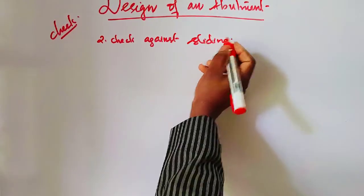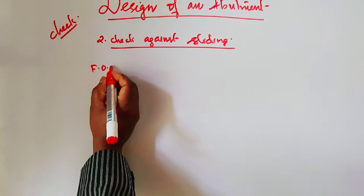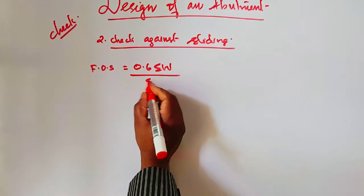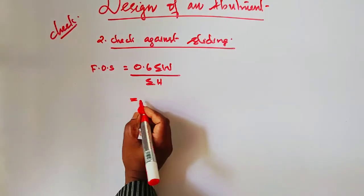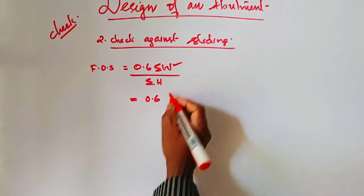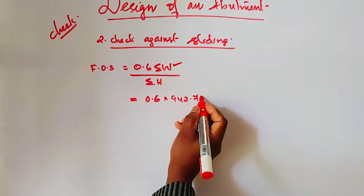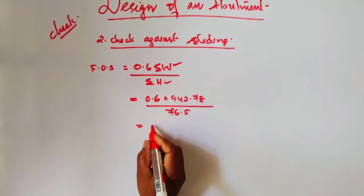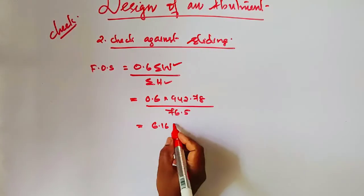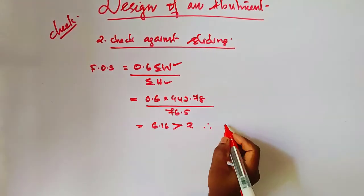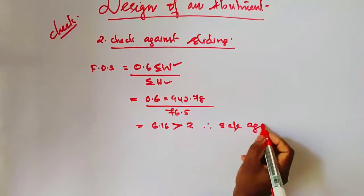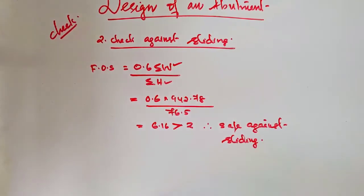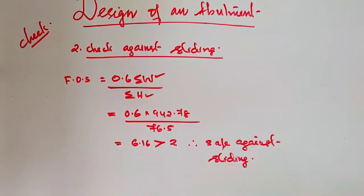Next is the check against sliding. The factor of safety against sliding equals resisting force divided by sliding force: FOS = 0.6 × ΣW / ΣH = 0.6 × 942.78 / 76.5 = 6.16. Since 6.16 is greater than 2, the abutment is safe against sliding. The factor of safety against sliding should not be less than 2.